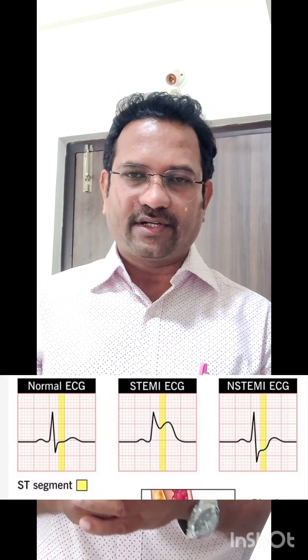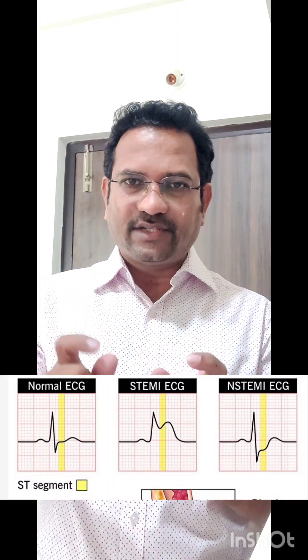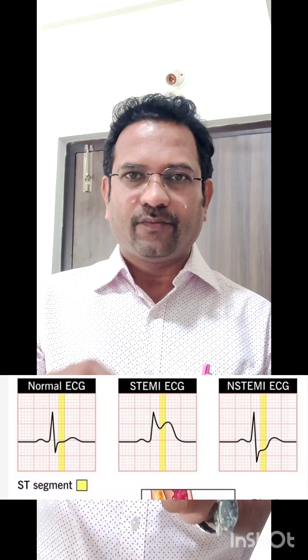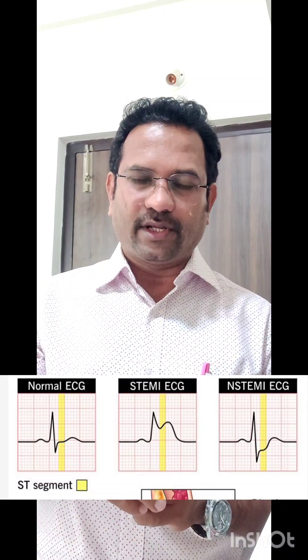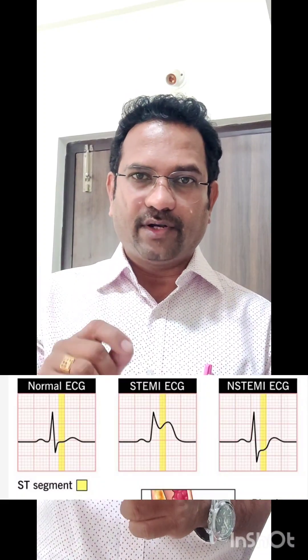There are two major types: ST elevated myocardial infarction and non-ST elevated myocardial infarction. That ST comes from ECG — we have PQRST waves. P wave indicates atrial depolarization, QRS wave indicates ventricular depolarization, and T wave indicates ventricular repolarization.